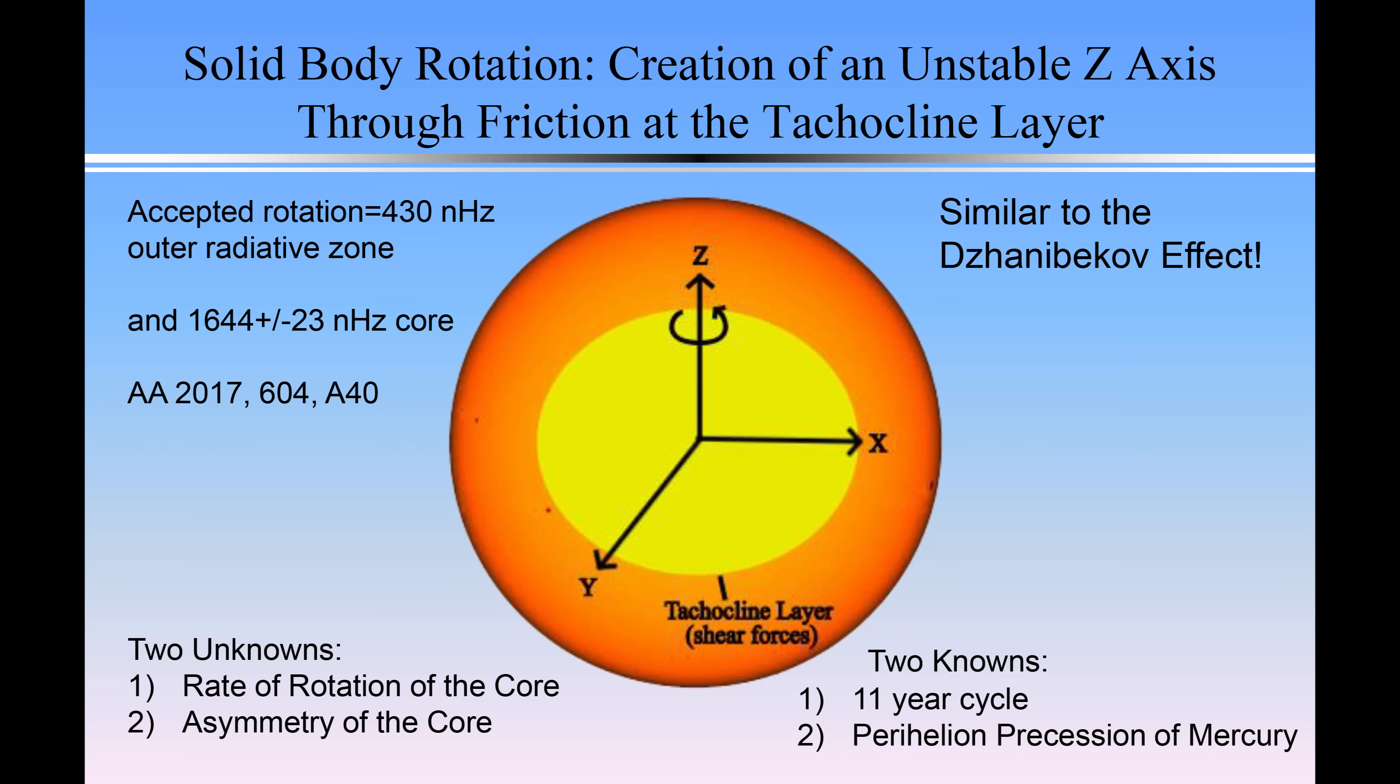We know the 11-year cycle. We have two unknowns. What is the real rate of rotation of the core and what is its asymmetry? And there's two things that we know. We know the 11-year cycle and we know the perihelion precession of Mercury. From these two knowns, we should be able to establish the amount of asymmetry in the solar core and how much it's rotating and therefore the inversion. What's nice about this problem is that we solve two problems. We bring two problems together with one approach.